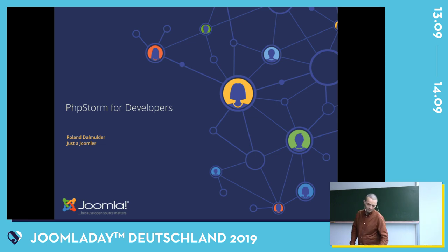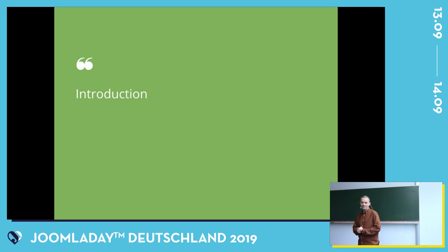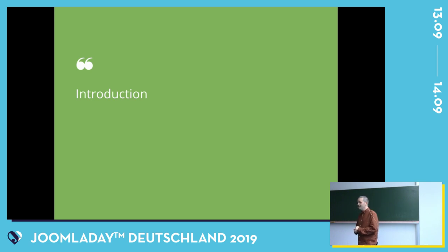So let's just start. PHPStorm is one of the tools I started using quite a few years ago. Before, I started with something called J-Edit, which is still around, but I don't know whoever still uses it. It's actually an editor for Java, but it had a PHP plugin and it's free. So for a starting developer, that was a great tool. But then the development of the PHP plugin kind of stopped, so I switched over to Eclipse, another free tool.